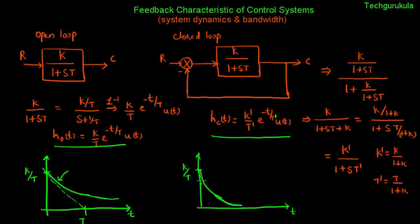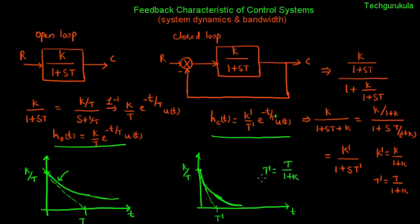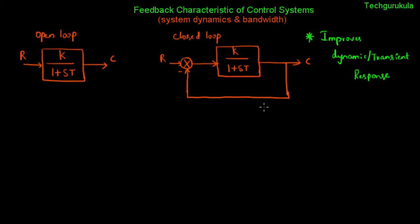If you compare T to T prime, T prime is T over (1+k), so the time constant has reduced significantly. As a result, the dynamic response of the closed loop system has improved — it is faster and can track any input better compared to the open loop case. As we have seen, negative feedback improves the dynamic or transient response of the system compared to its open loop counterpart.